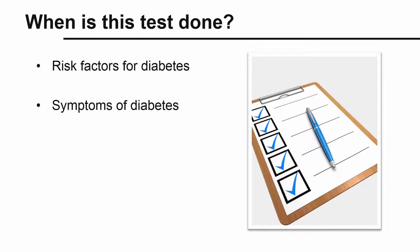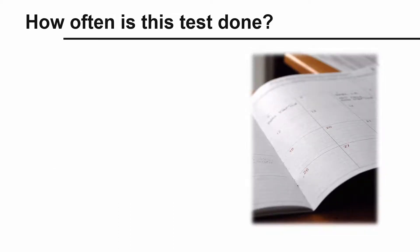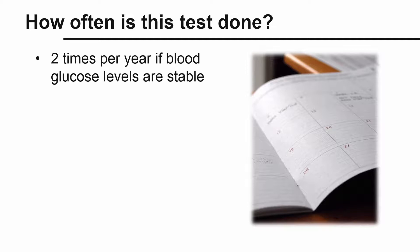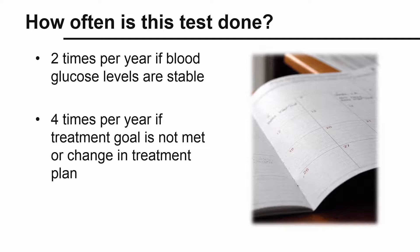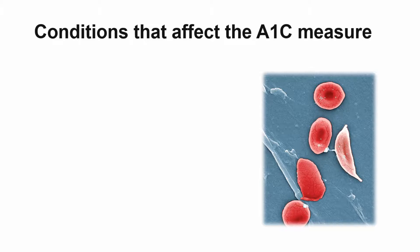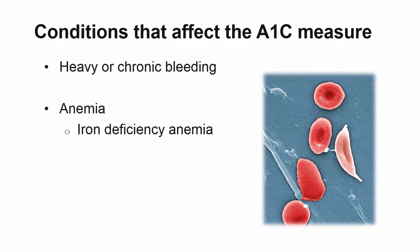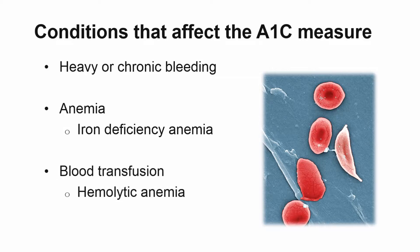It is also used for monitoring purposes after being diagnosed with diabetes. For those with diabetes, the test is usually conducted two times a year by a healthcare provider if your blood glucose levels are stable. Your healthcare provider might conduct the test four times a year if your treatment goal is not met or if there is a change in your treatment plan. There are some conditions that will give a false A1c reading. If you experience heavy or chronic bleeding, your hemoglobin stores may be depleted, making your A1c test results appear low. If you have iron deficiency anemia, which is when blood lacks an adequate amount of red blood cells, your A1c test results may appear high. If you had a recent blood transfusion or hemolytic anemia, red blood cells are destroyed before their intended lifespan, and the results may appear low.